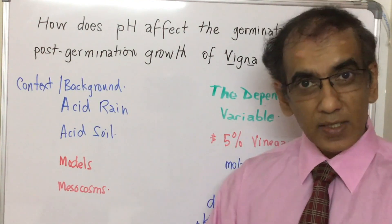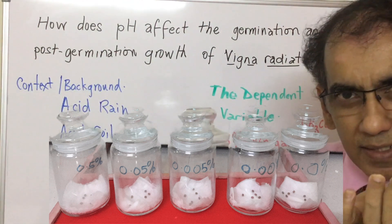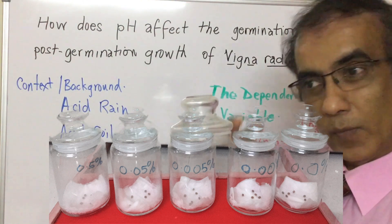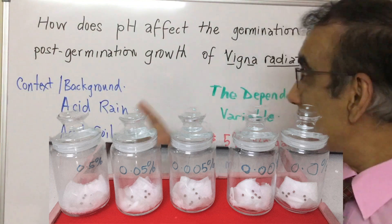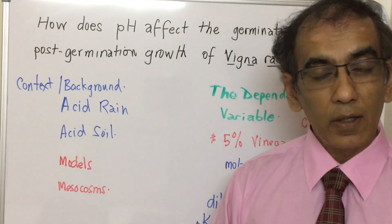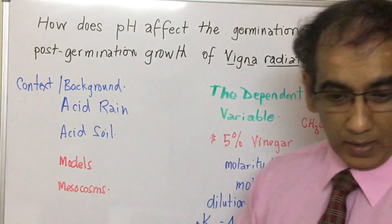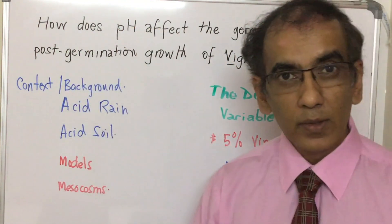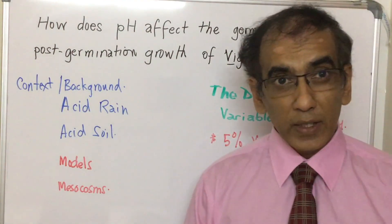Next, set your experiment up at home by placing six mung beans with their micropyle — the little scar on the side of the seed — facing down into the liquid. Put a cover on the container and let it sit for 48 hours. At that point you can record the germination frequency: how many seeds germinated within 48 hours. Continue observing for another 48 hours, then you'll know how many germinated at 96 hours and which pH that corresponded to. Then use your closed mesocosm system to track post-germination growth.